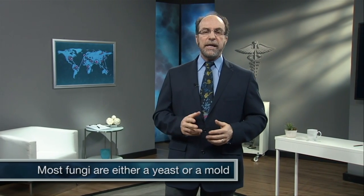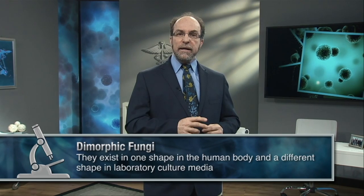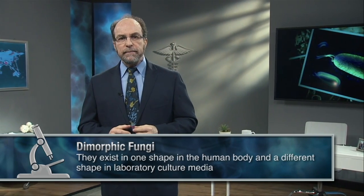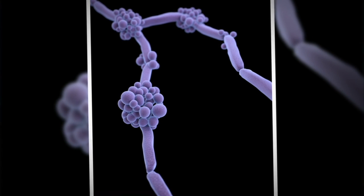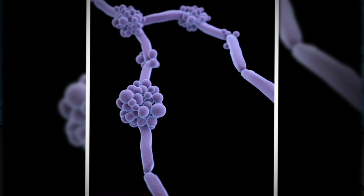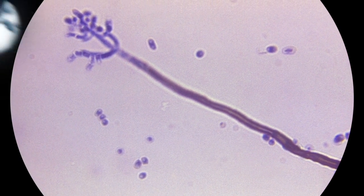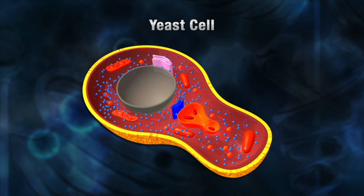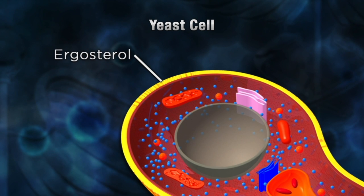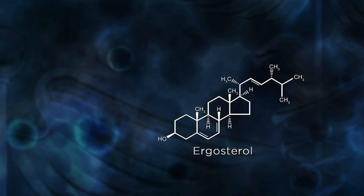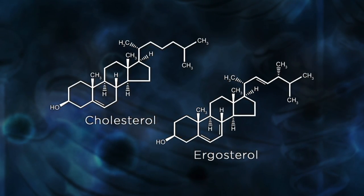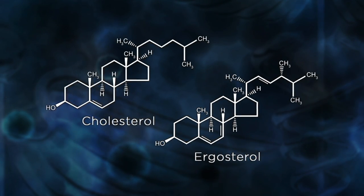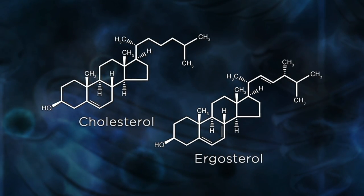Most fungi are either a yeast or a mold. However, there are some fungi that are dimorphic — they exist in one shape in the human body and a different shape in laboratory culture media. A yeast is a unicellular form of fungal growth. These cells can appear spherical or elliptical, and they reproduce by budding. Spores are the reproducing bodies of molds. Cell membranes of fungi are also more complex than those of bacteria. The outer cell contains a building block called ergosterol, which is similar in structure to cholesterol, an ingredient of human cell membranes. This can be important since some antifungal medications may have side effects associated with the structural similarity between ergosterol and cholesterol.